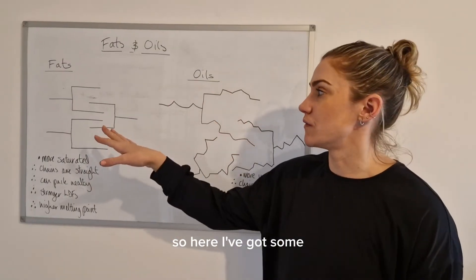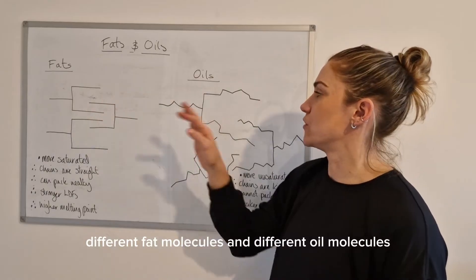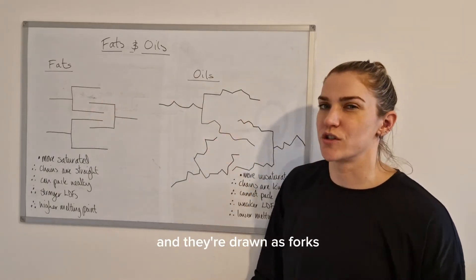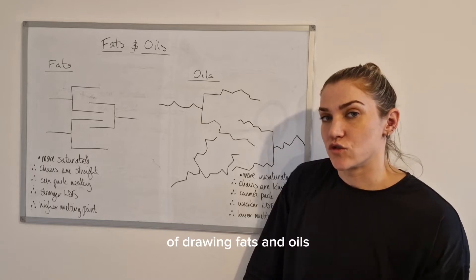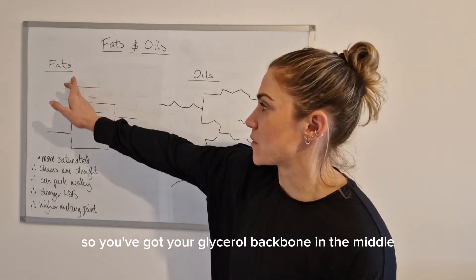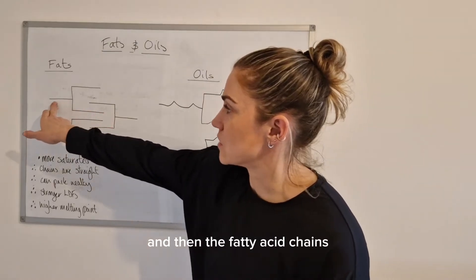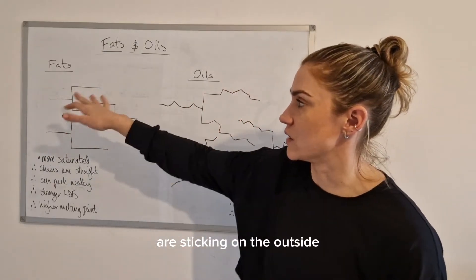Here I've got a group of fat molecules and a group of oil molecules, and they're drawn as forks. This is the low level detail way of drawing fats and oils. You've got your glycerol backbone in the middle and then the fatty acid chains sticking on the outside.